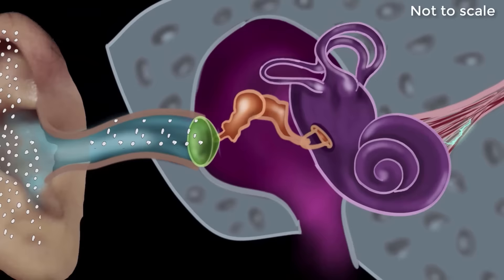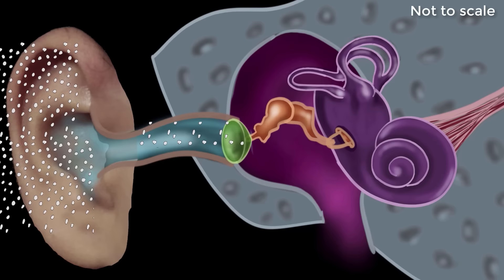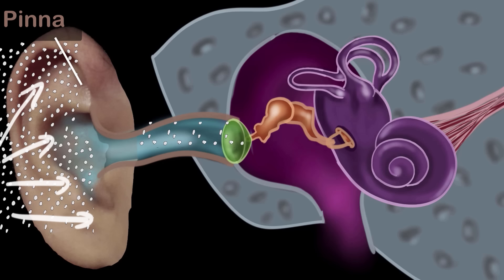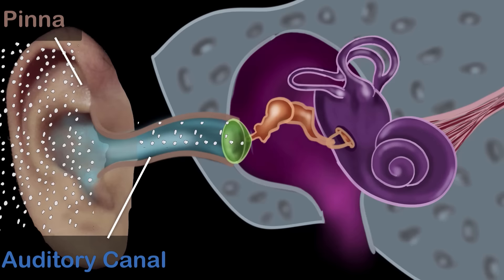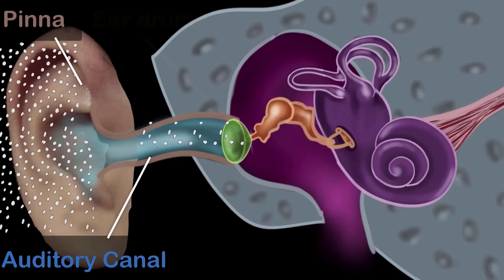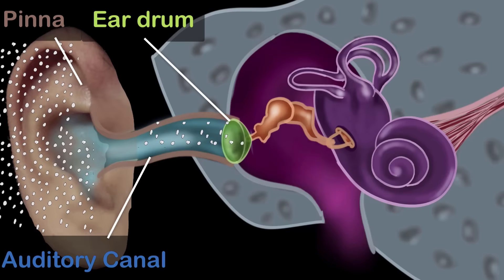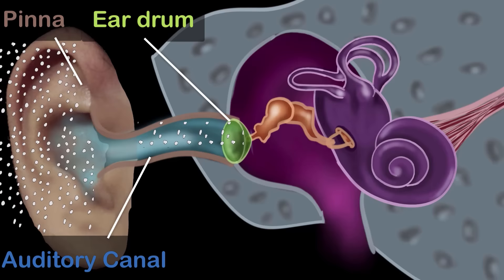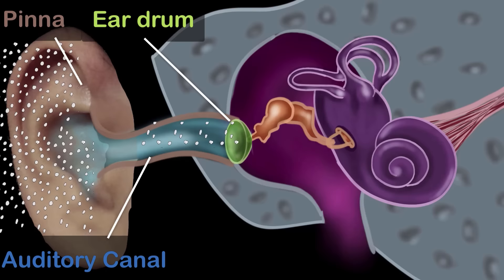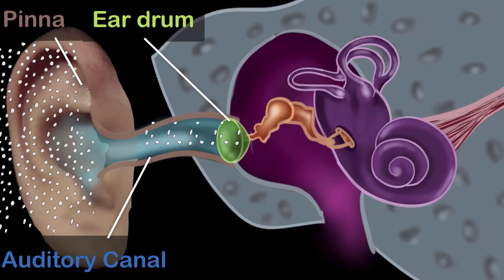Our ear can be divided into three parts: the outer ear, the middle ear, and the inner ear. The outer ear starts with the pinna — it's the part that you can see and touch. Its job is to collect as much sound waves as possible and channel it into the auditory canal. The sound waves pass through the auditory canal and eventually meet the eardrum, shown in green. The eardrum is a transparent membrane which is super sensitive to the vibrations of the air, so as the air vibrates, the eardrum starts vibrating too — just like the skin of a drum. The eardrum also separates the outer ear from the middle ear.